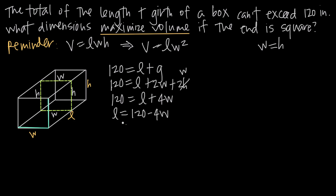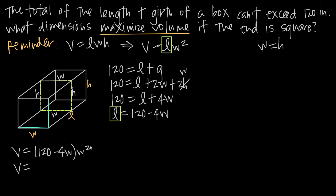Now we take the value we found for L — which is 120 − 4w — and plug it into our volume equation to get volume in terms of width only. So V = (120 − 4w) × w². Distributing the w², we get V = 120w² − 4w³. Now we have a volume equation in terms of one variable only.